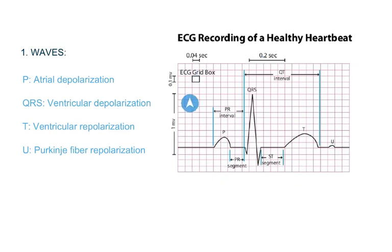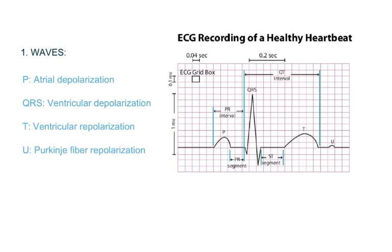This is an ECG paper and this is one healthy heartbeat. First we will look at the waves: the P wave, then Q, R, S wave, then T wave, and finally sometimes you can see a very small U wave at the end of the T wave. P wave represents atrial depolarization, or in simple words atrial contraction. QRS complex represents ventricular depolarization, that is ventricular contraction. T wave represents ventricular repolarization, that is ventricular relaxation. U wave represents Purkinje fiber repolarization or relaxation. You cannot see any wave representing atrial repolarization because it is masked under ventricular contraction, that is the QRS complex.